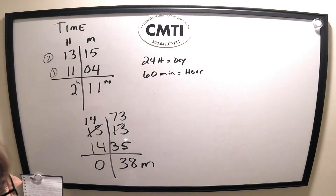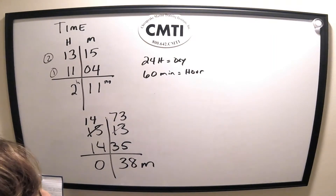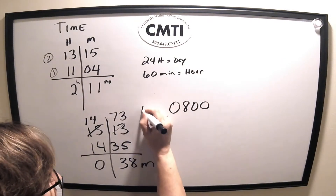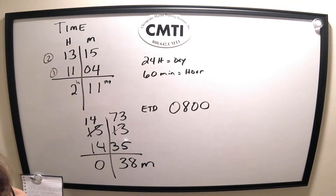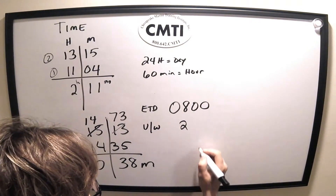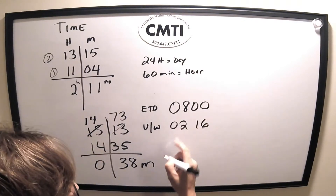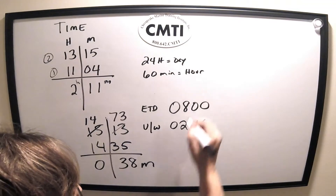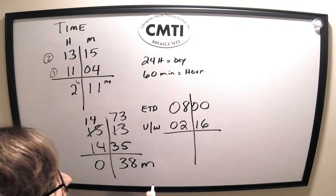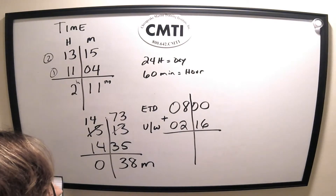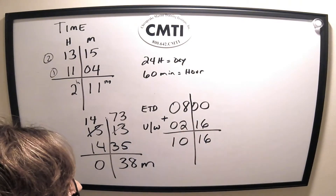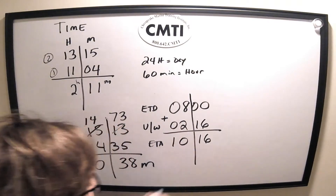Now let's calculate what time we're going to arrive somewhere. Our departure time — ETD — is 0800, and we're going to be underway for 2 hours and 16 minutes. We put in our time T and add, because we got underway at a certain time and were underway for a certain amount of time. 16 plus 0 is 16; 8 plus 2 is 10. Our ETA is 1016 in the morning.